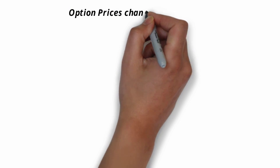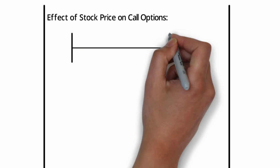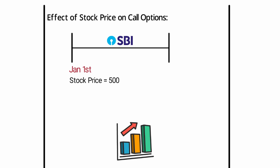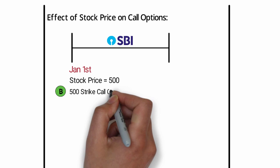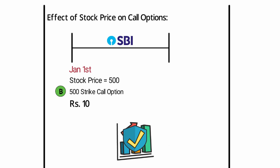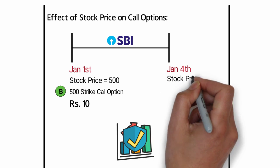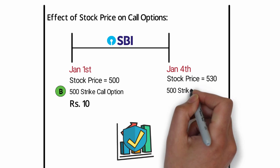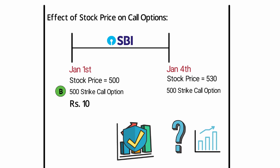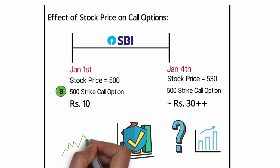Let's first understand how option prices change with stock price — the effect of stock price on call options. Assume on January 1st, SBI is trading at 500 rupees. You want to buy SBI soon but are afraid the price may go up, so you buy a 500 strike call option. I charge you 10 rupees for selling you protection from price fluctuation, as we learned in the previous videos. After three days, on 4th January, SBI went to 530 rupees. The price of the 500 call option will increase — it will be somewhere around 30 rupees, slightly more.